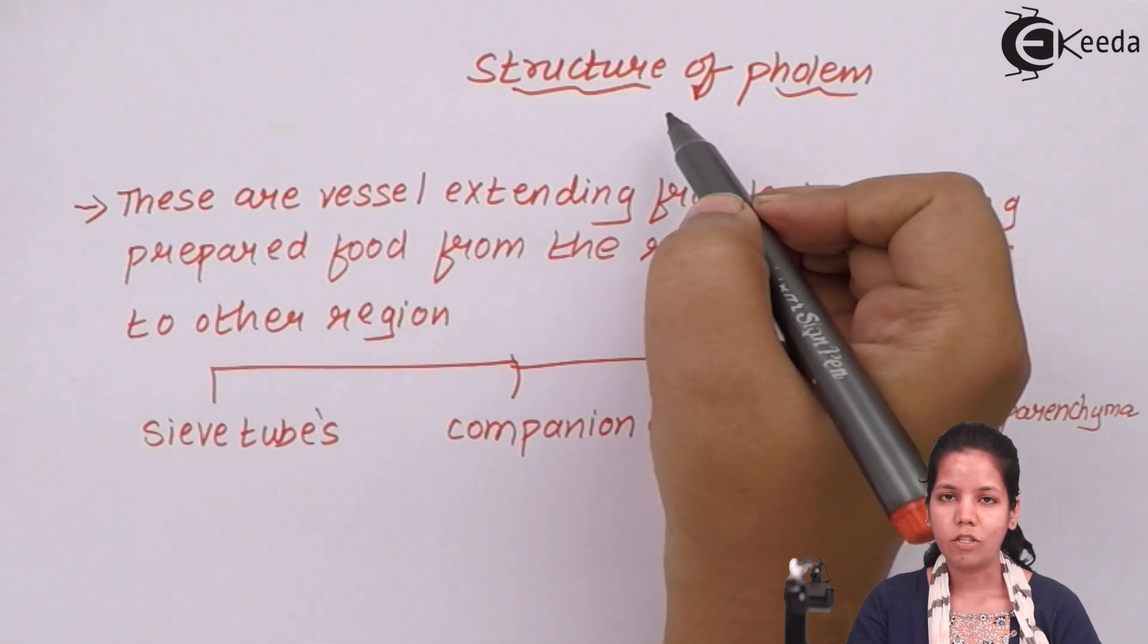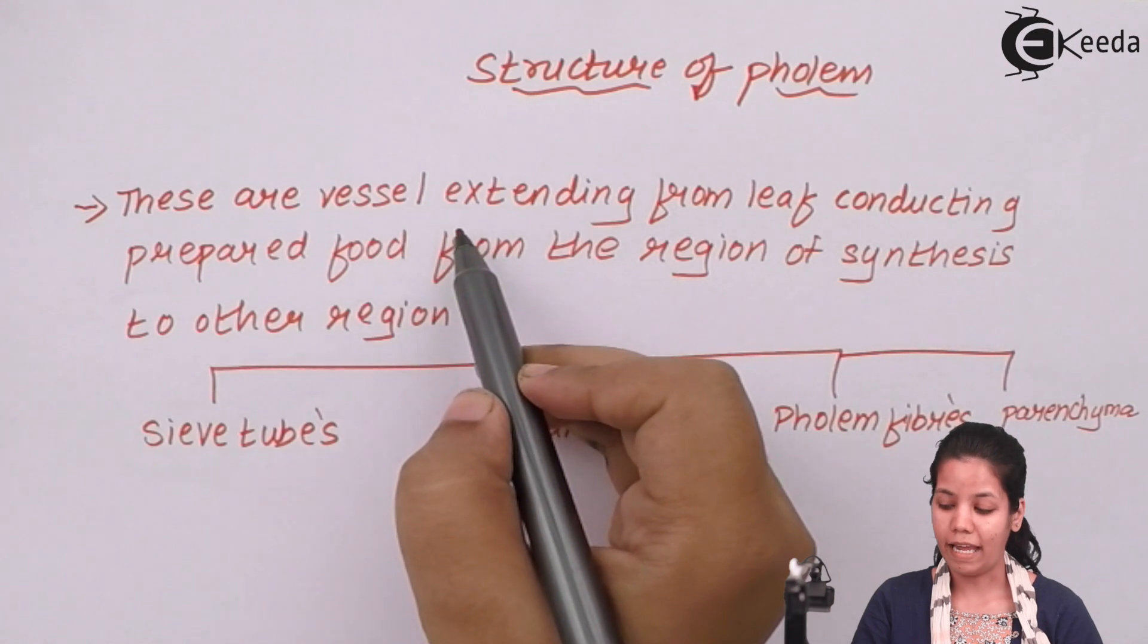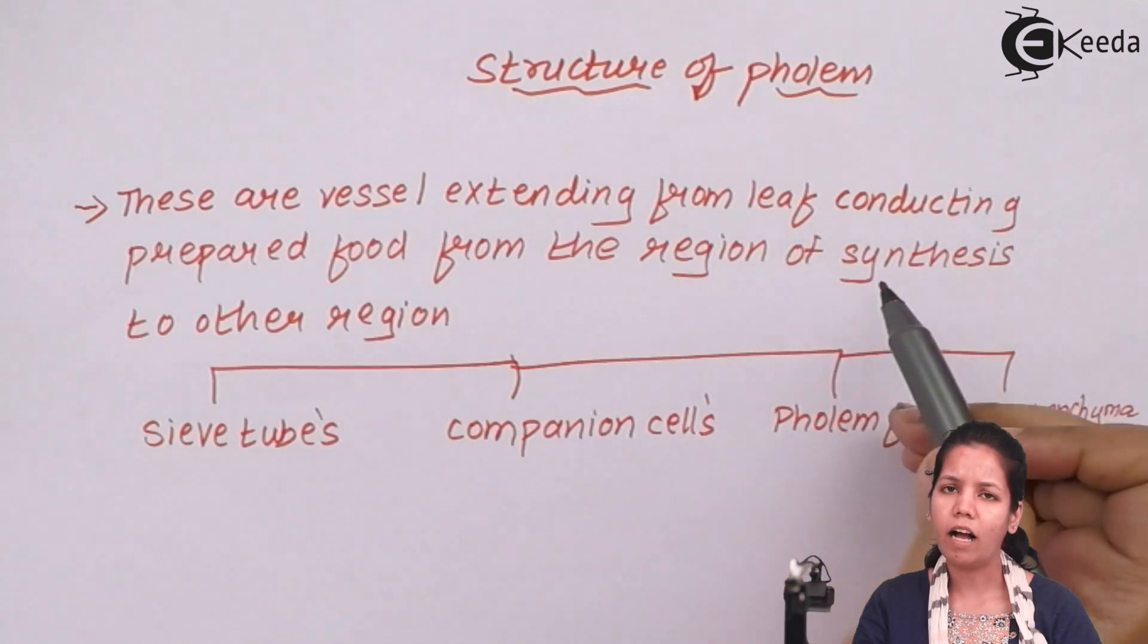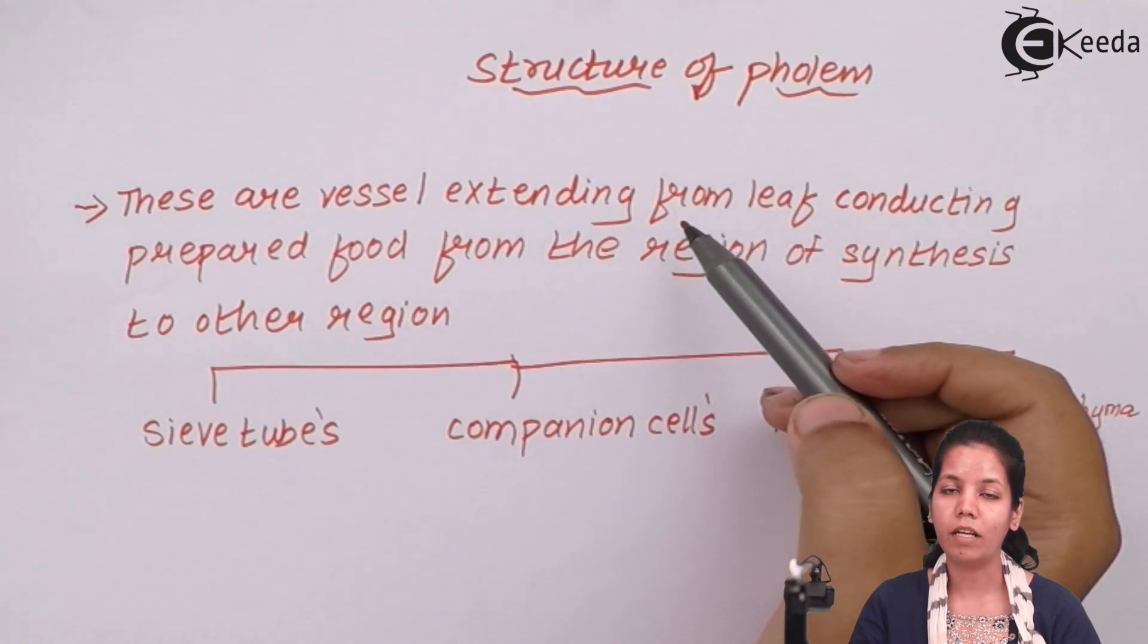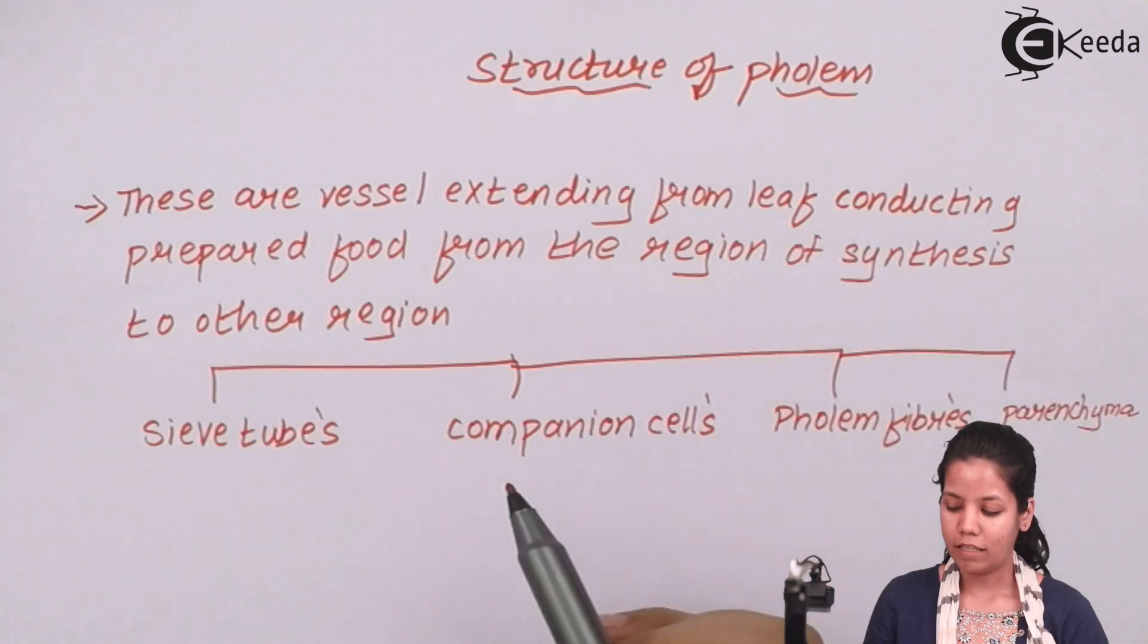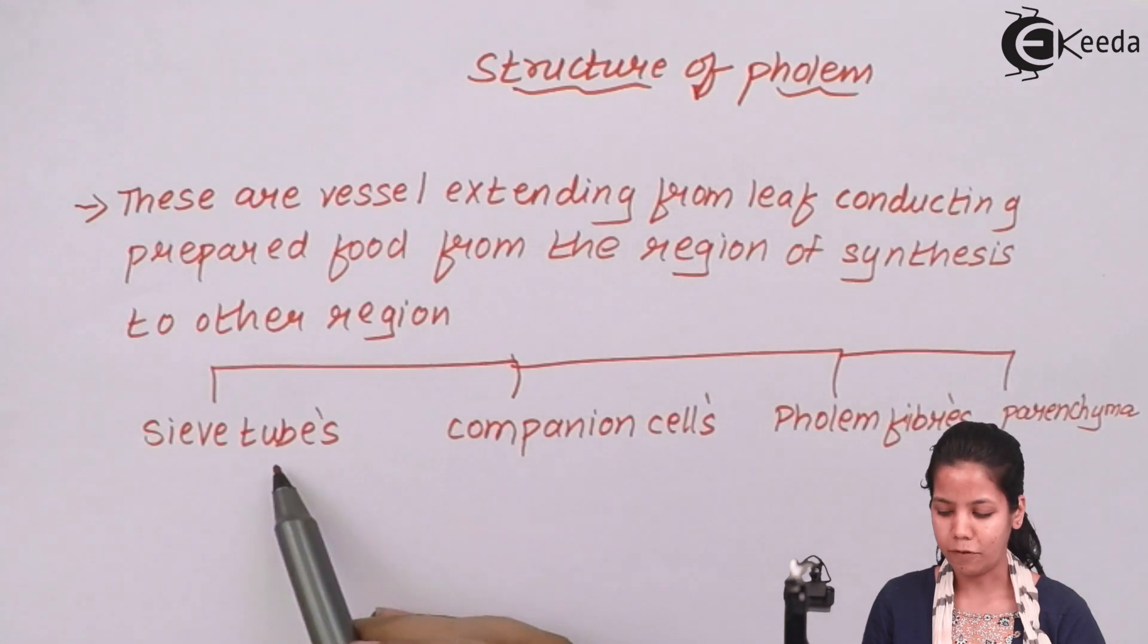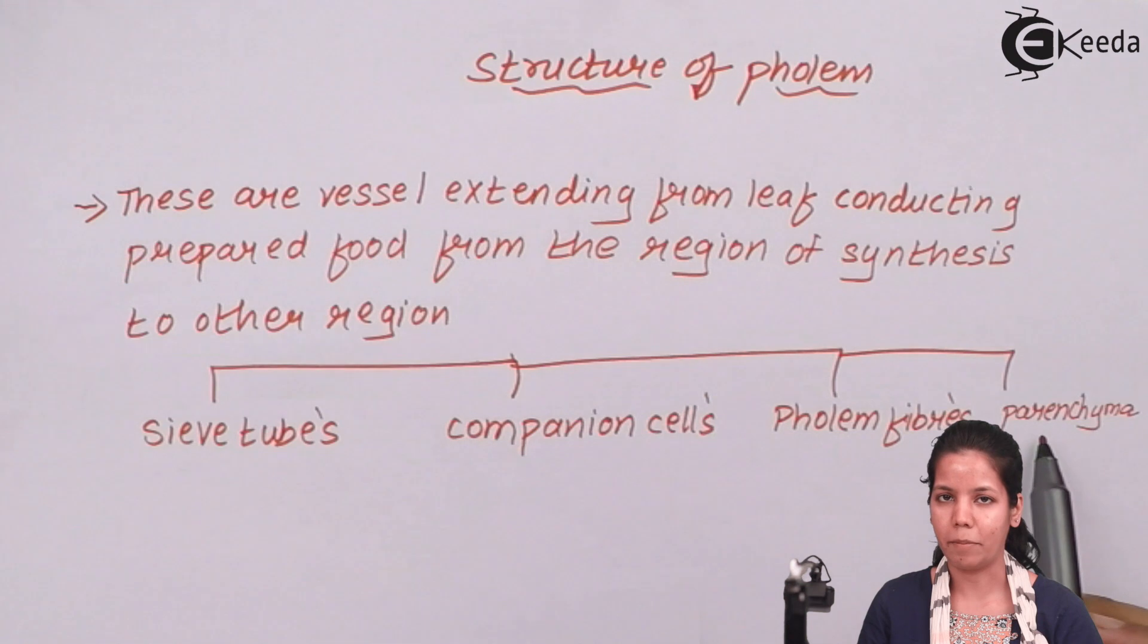The structure of phloem basically is these are vessels that are extending from the leaf region where the food is prepared to the region where another kind of synthesis would be taking place. For example, phloem basically conducts or takes away prepared food from the leaves to other parts of the plant. The structure of phloem consists of four different types of cells: sieve tubes, companion cells, phloem fibers, and parenchyma cells.